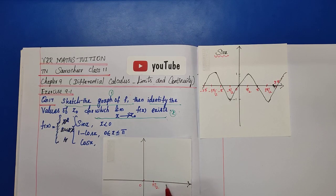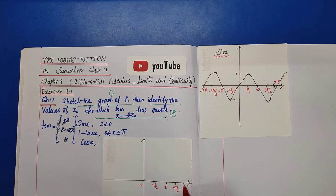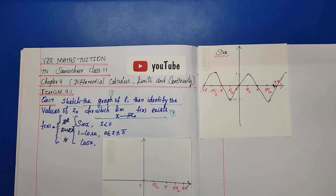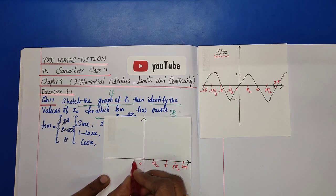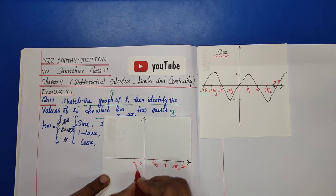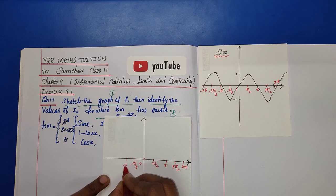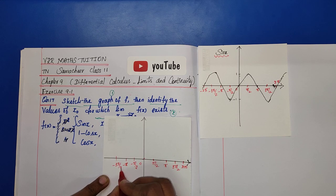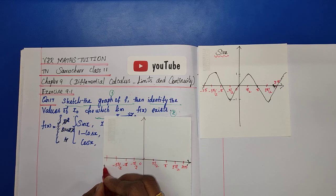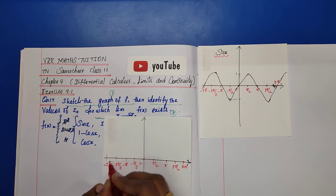For the cos x graph, setting up the x-axis with points: 0, pi/2, pi, 3pi/2, 2pi. On the left side: minus pi/2, minus pi, minus 3pi/2, minus 2pi.